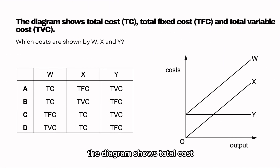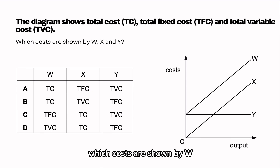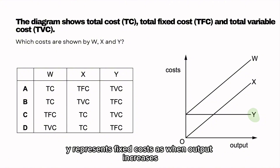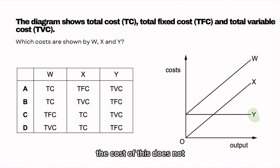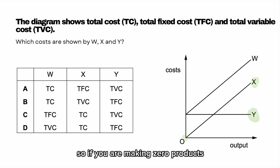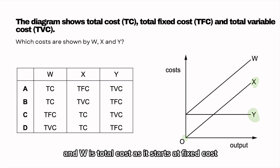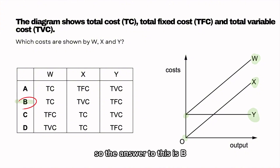The diagram shows total costs, fixed costs, and total variable costs. Which costs are shown by W, X, and Y? Y represents fixed costs, as when output increases the cost does not change. X represents total variable costs, as it starts from zero — if you are making zero products your variable cost will be zero. W is total cost, as it starts at fixed costs, meaning it is the sum of X and Y. So the answer is B.